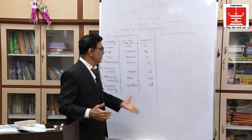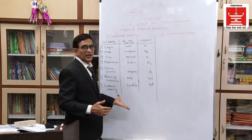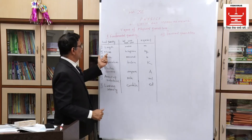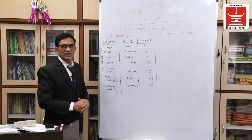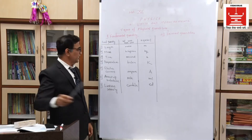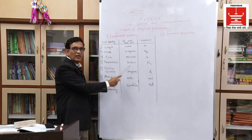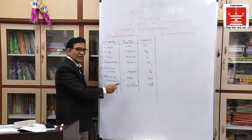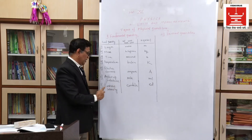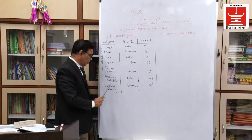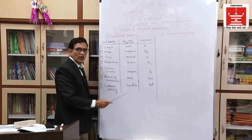In nature, there are these 7 fundamental quantities. Let me revise: length, mass, time, temperature with unit Kelvin, electric current with unit ampere, amount of substance with unit mole, and luminous intensity with unit candela.